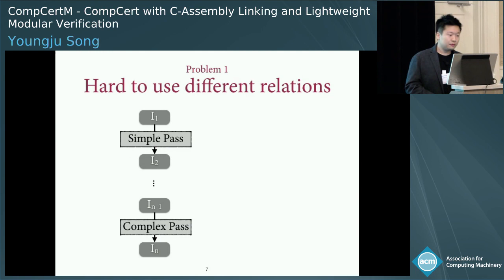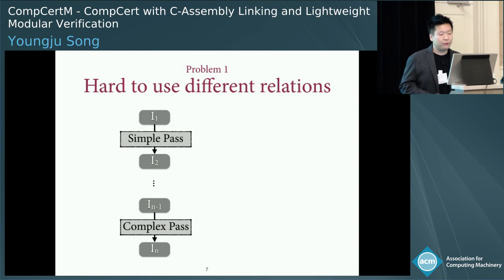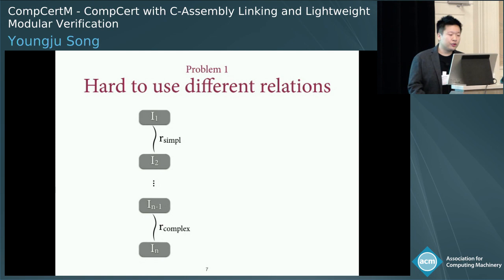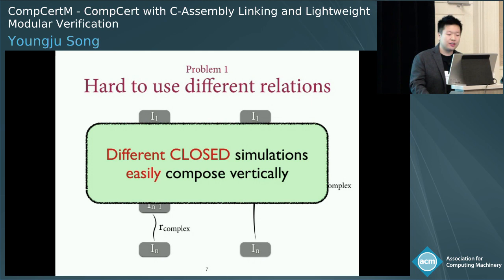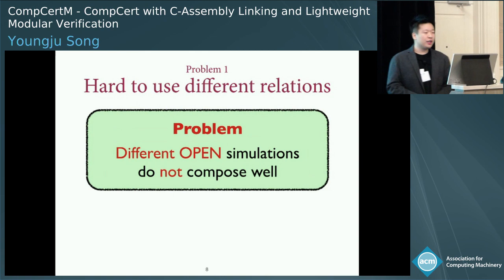I will discuss the problems with open simulations first, and then show you how we solve them. Open simulations have problems with composing the proofs. Specifically, there are two problems. The first problem is that Compositional CompCert forbids the use of different custom open simulations for different passes, which is crucially used to simplify the proofs in the original CompCert. Consider the following example, where a program is compiled through multiple passes mixed with simple and complex ones. To simplify the proofs, CompCert uses a simple simulation relation for a simple pass and a complex one for a complex pass. These different relations are vertically composed to establish an end-to-end simulation. Closed simulations can be easily composed even between different ones. However, different open simulations do not compose well.